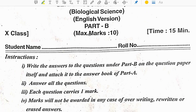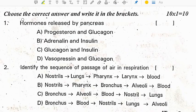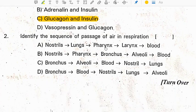We will discuss biological science part B answers now. Hormones released by pancreas are glucagon and insulin.